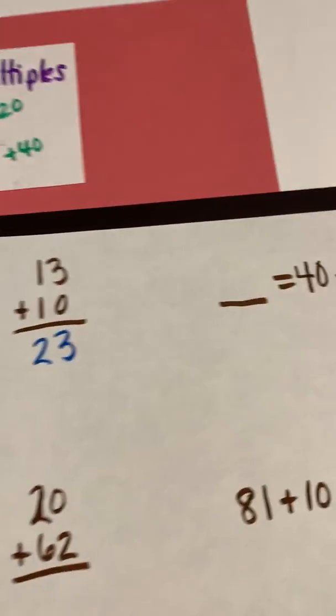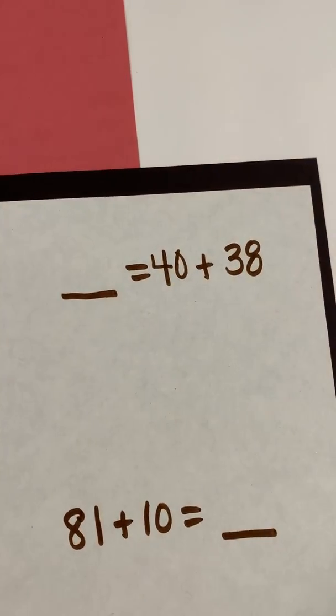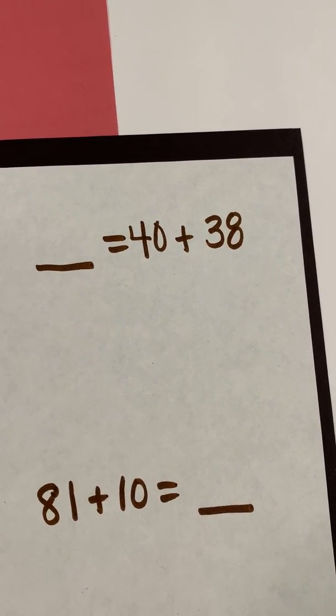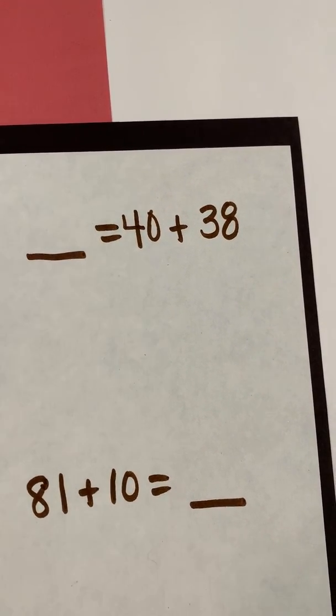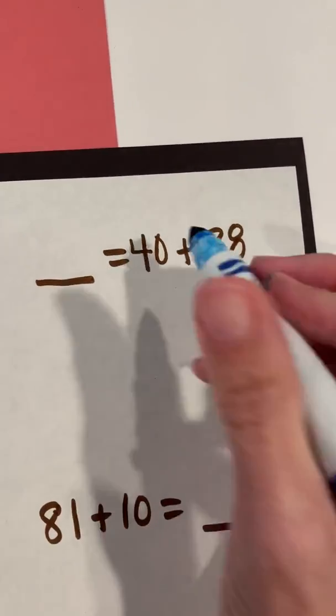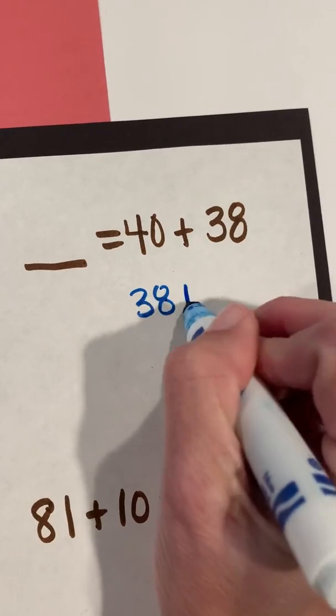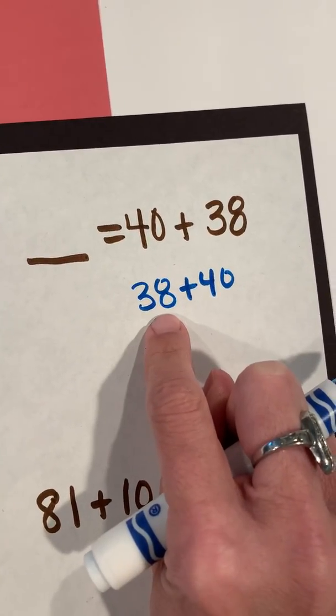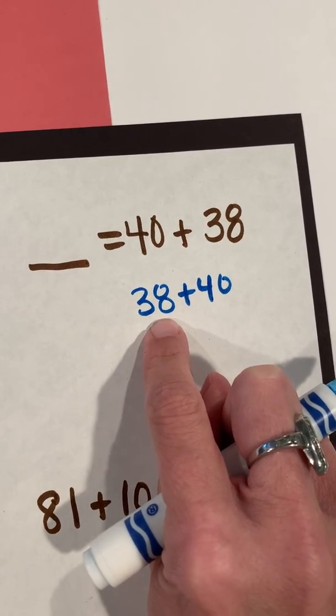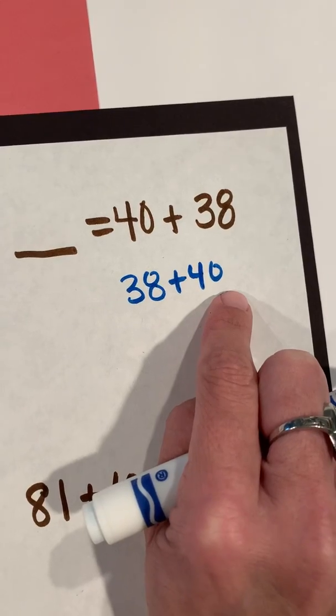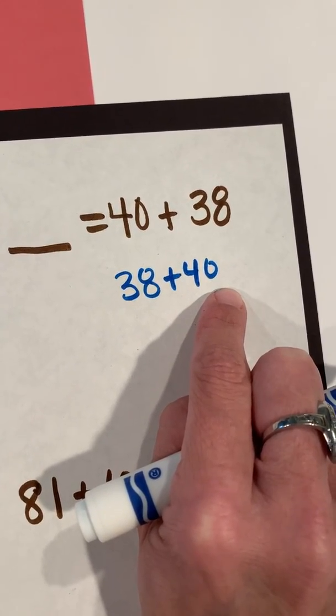So let's look at another one. What if I have 40 plus 38? Now I'm looking at that and I know with the commutative property, which means I can change the order of the numbers, I know that if I think of this as 38 plus 40, I know that I can do that and still get the same sum. So that's what I'm going to do. Even though I see 40 first, I'm going to start at 38 and then add on the 40 because it's going to make it easier for me.